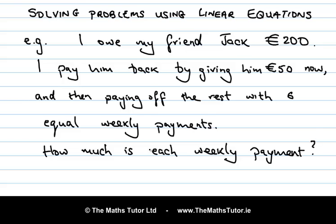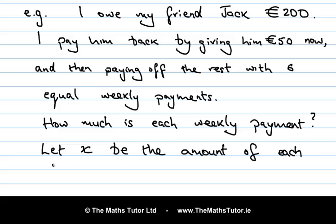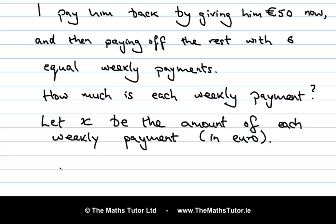First of all, let's name the variable. Let x be the amount of each weekly payment in euro. So we have 6 weekly payments, that's 6x, plus the single payment of 50 euro, and that adds up to the total amount. We have written the given information as an equation and now all we have to do is solve that equation.